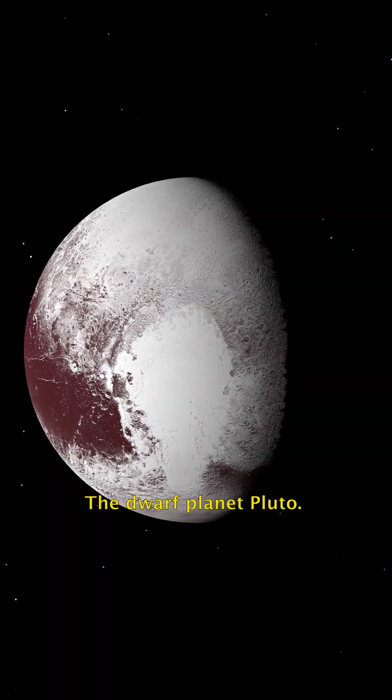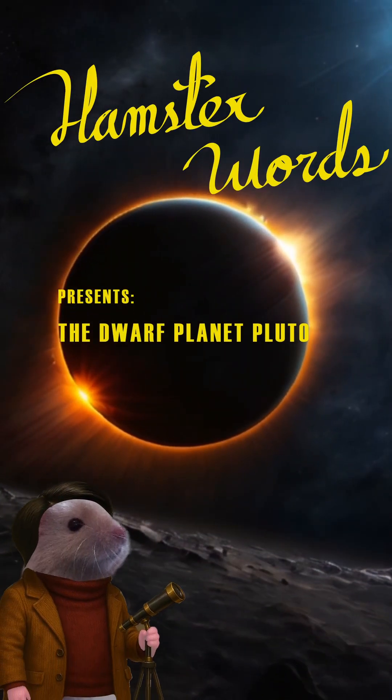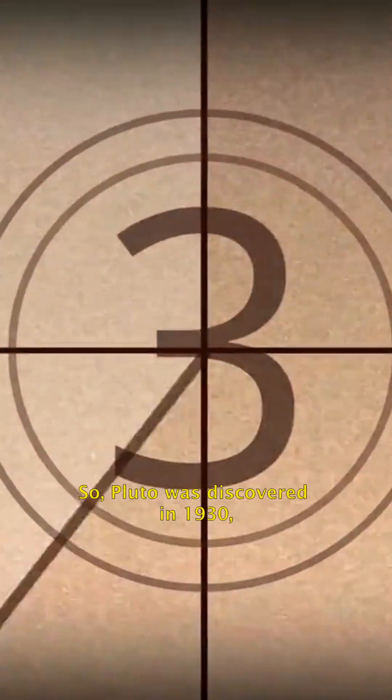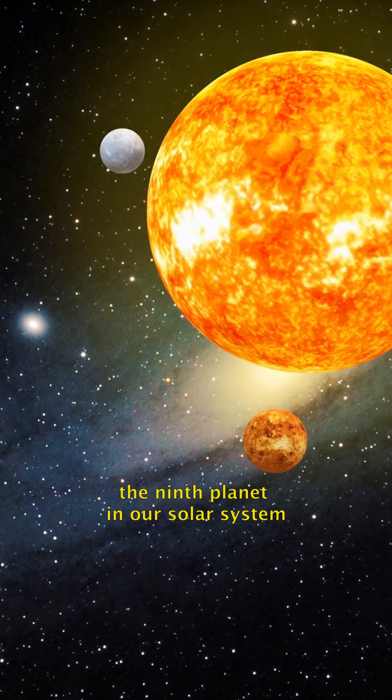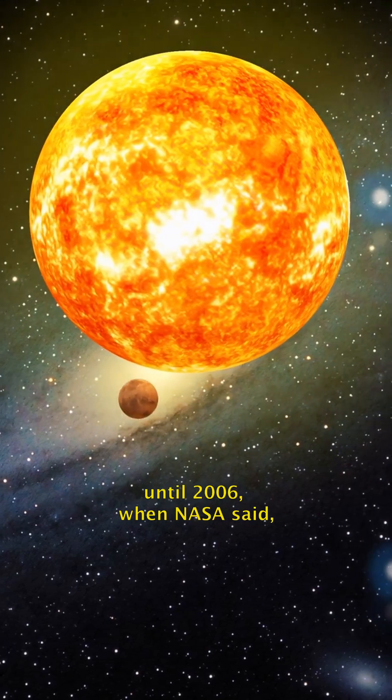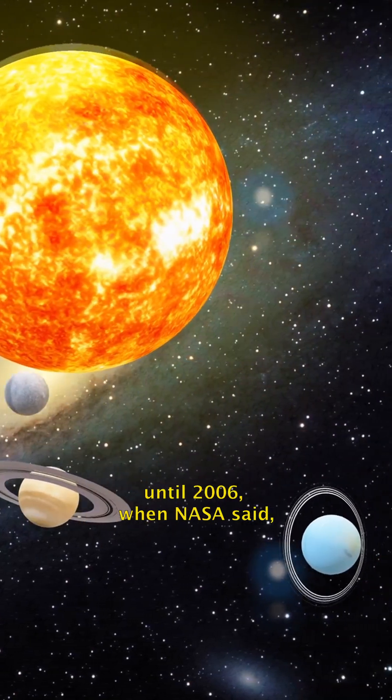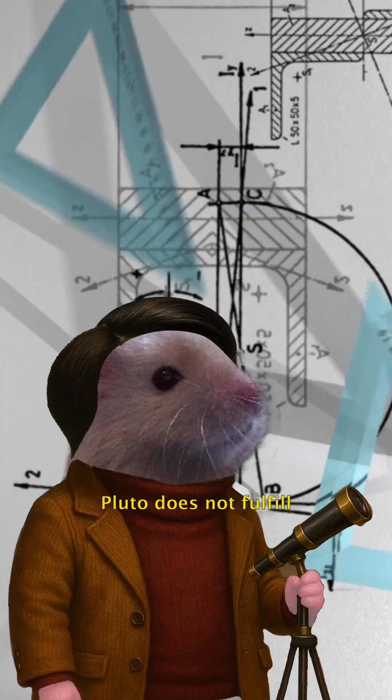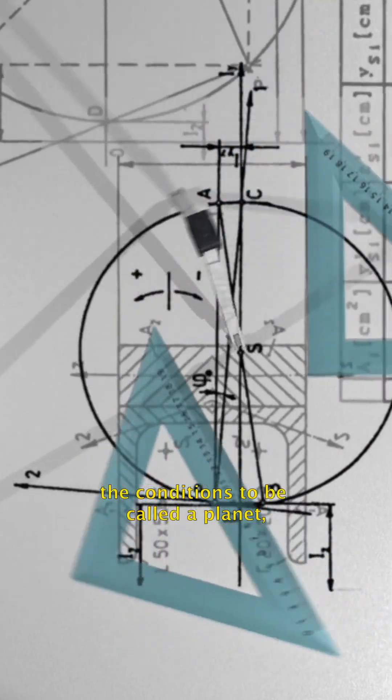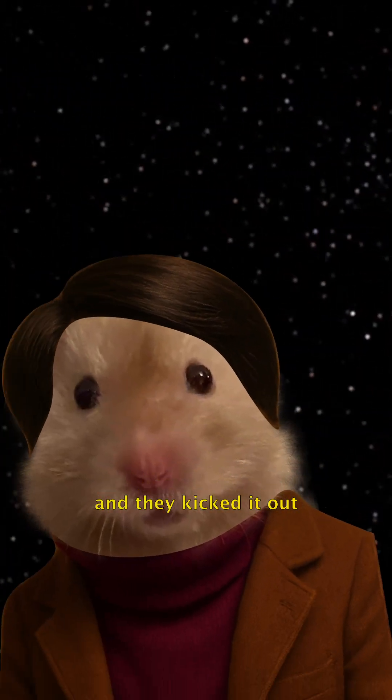The dwarf planet Pluto. So Pluto was discovered in 1930, and it was considered the ninth planet in our solar system for years and years, until 2006, when NASA said, but wait a minute, Pluto does not fulfill the conditions to be called a planet, and they kicked it out of their planet group.